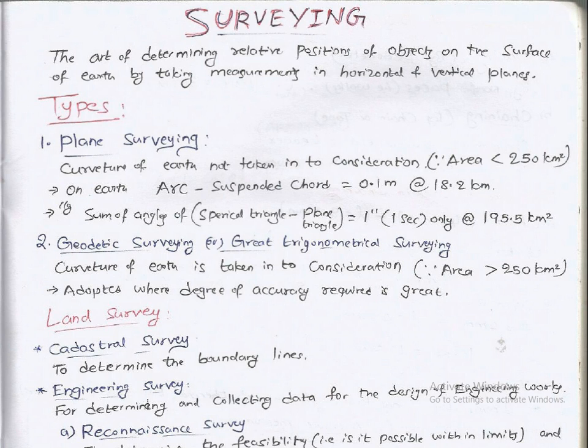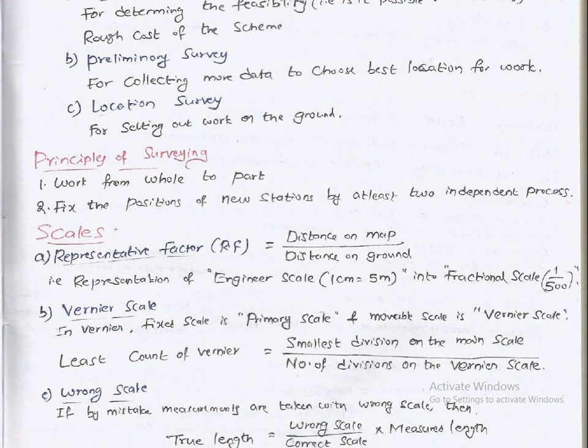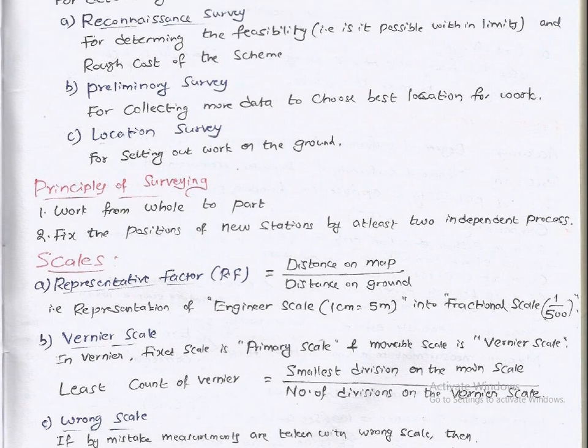Types of surveys include cadastral survey to determine boundary lines, engineering survey to determine and collect data for design of engineering works, reconnaissance survey for determining feasibility and rough cost of the scheme, preliminary survey for collecting more data to choose best location for work, and location survey for setting out work on the ground.